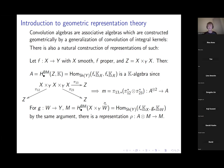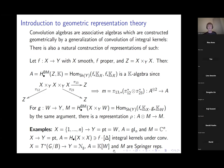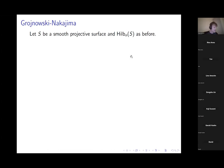Taking X to be the cotangent bundle of the flag variety and Y to be the nilpotent cone naturally leads to what people call Springer theory. You can learn about all this in the book of Chriss and Ginzburg, a classic graduate textbook in geometric representation theory.